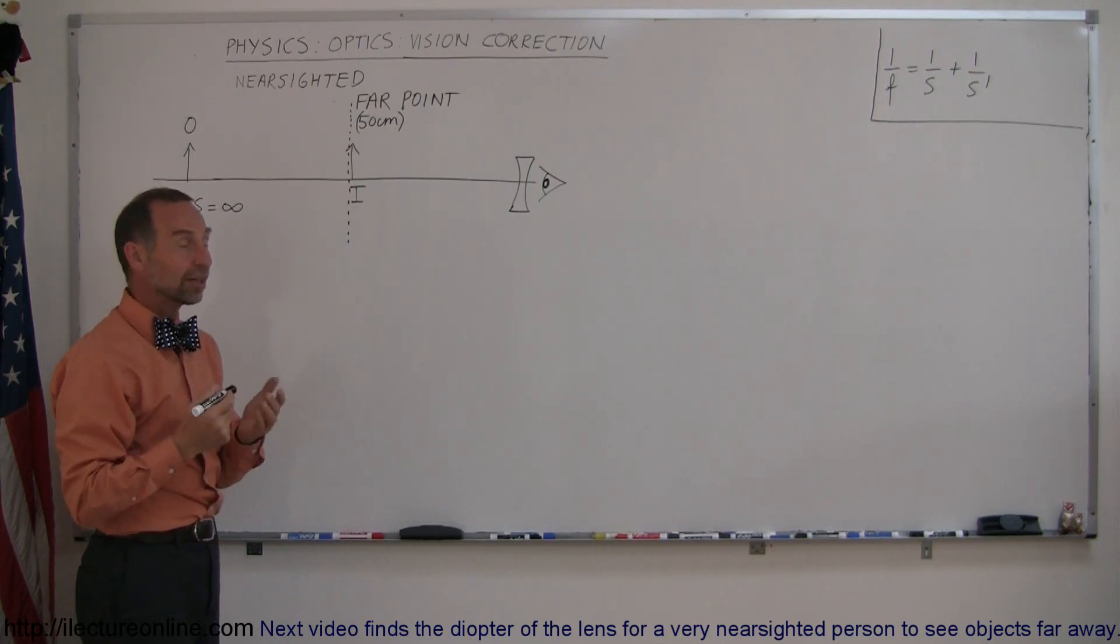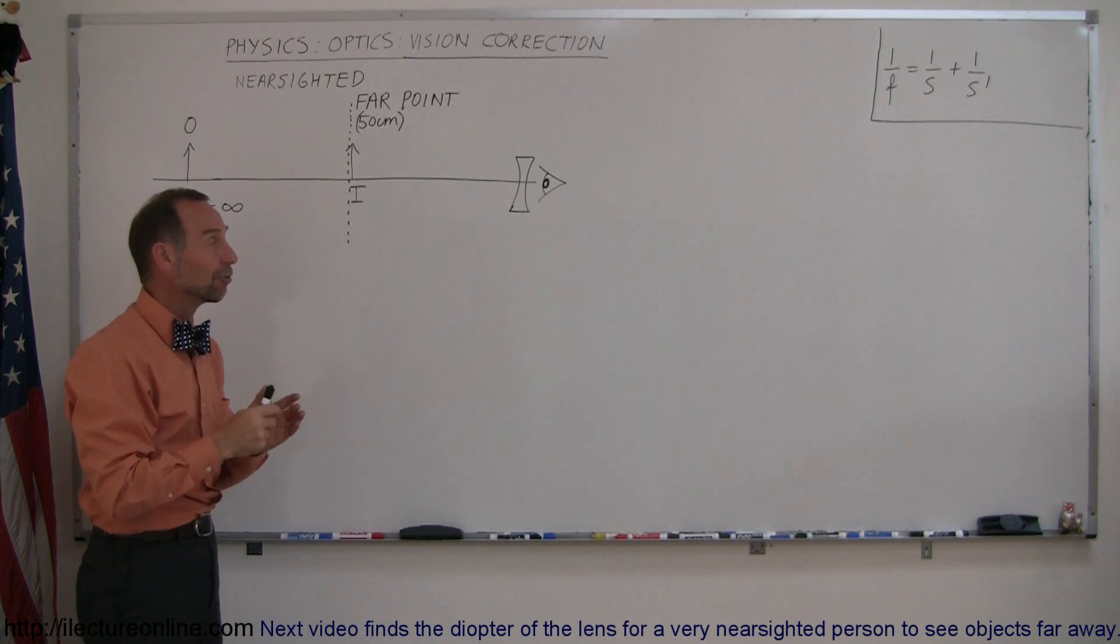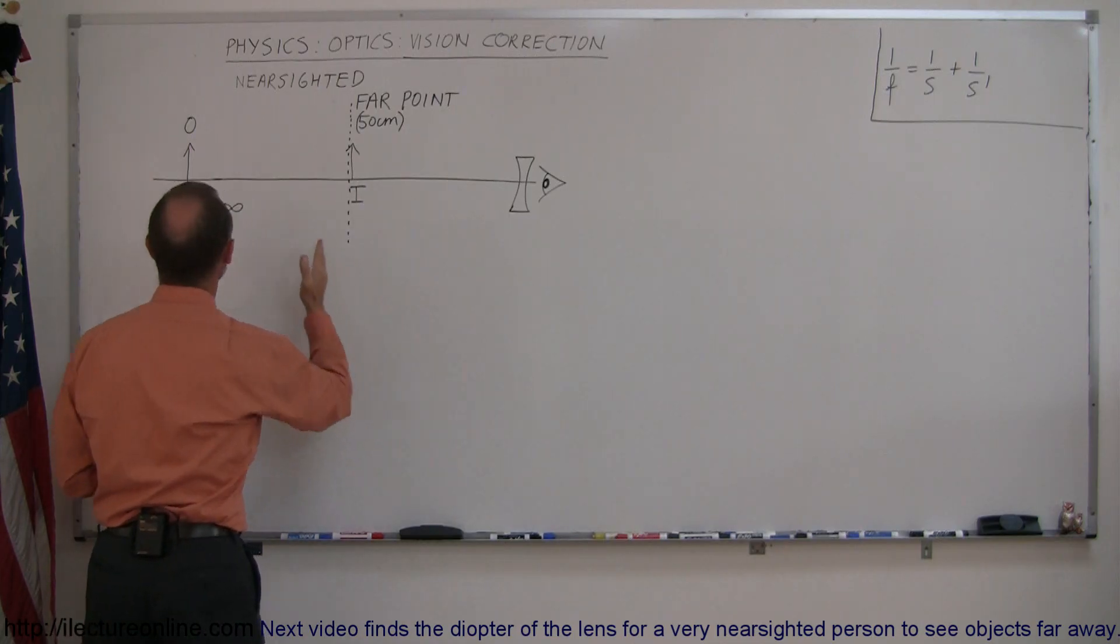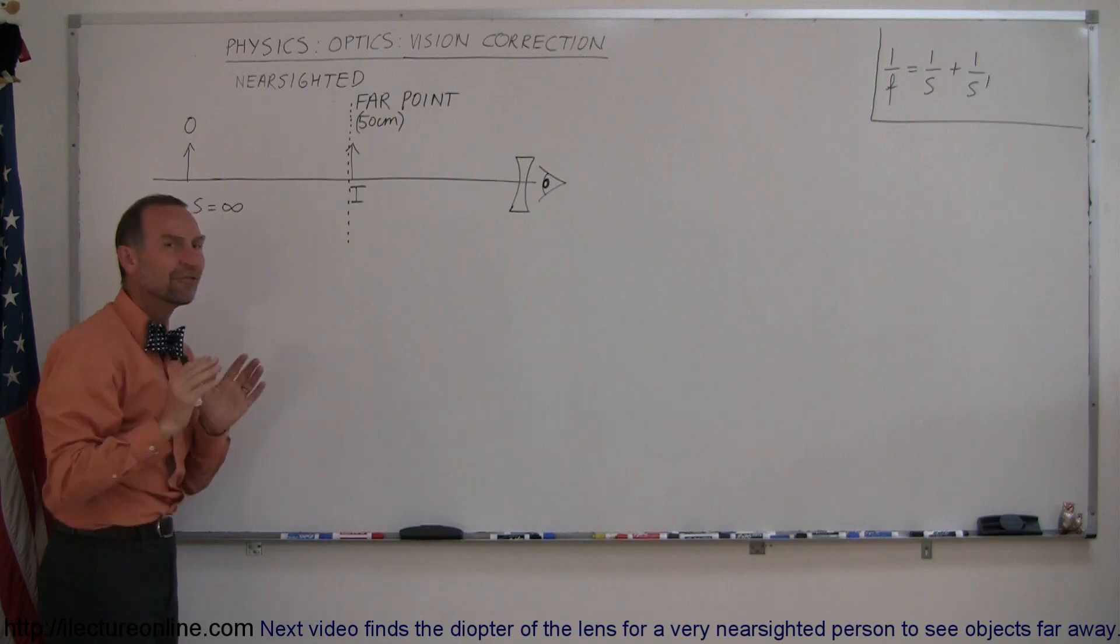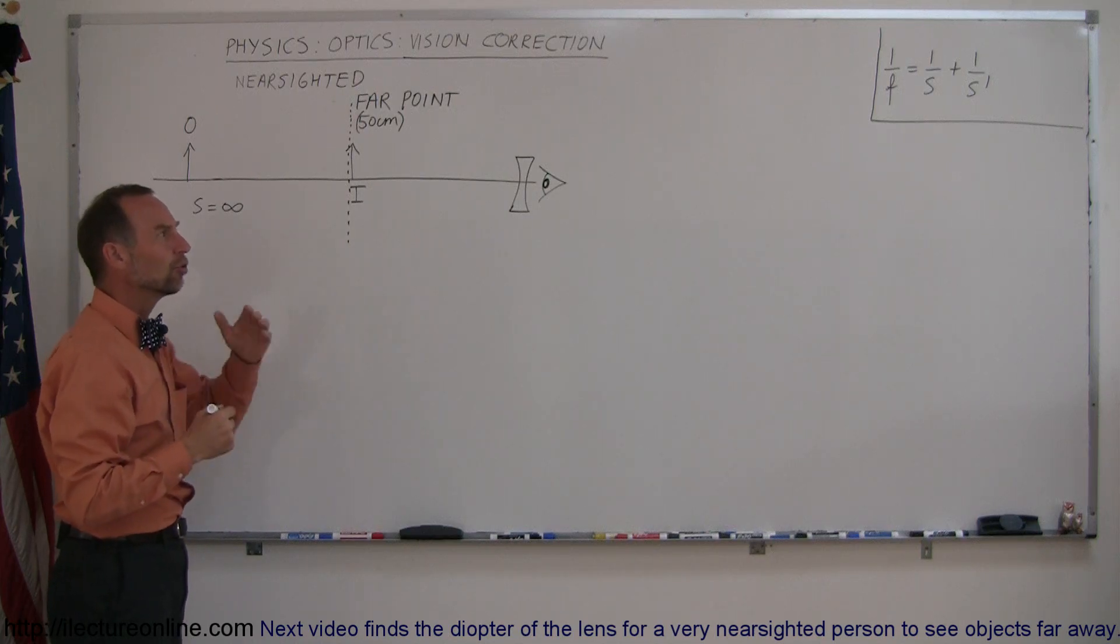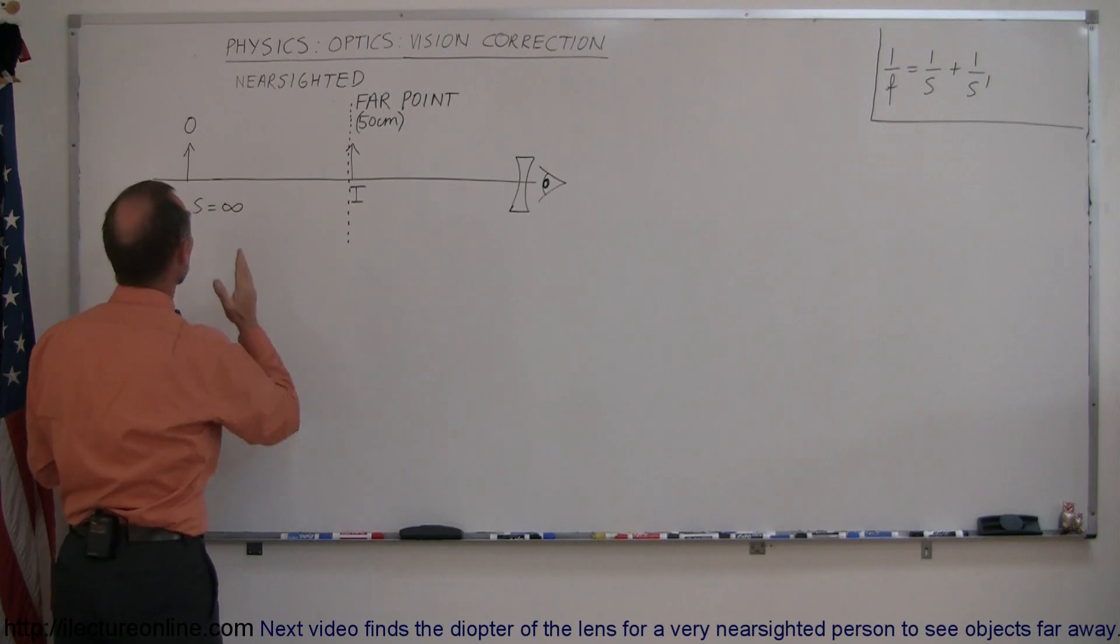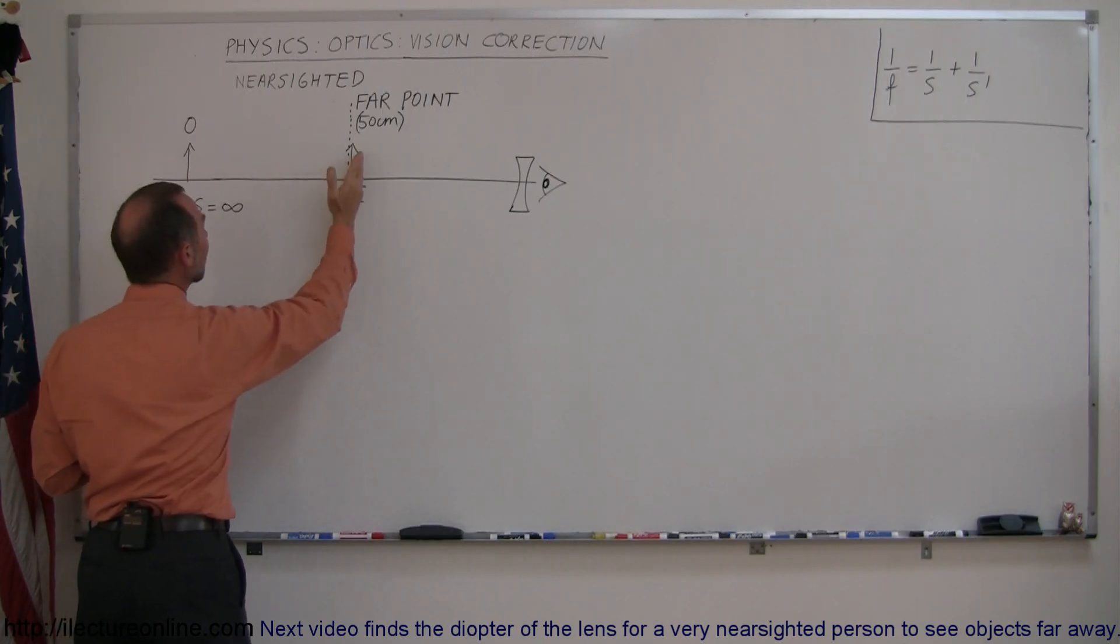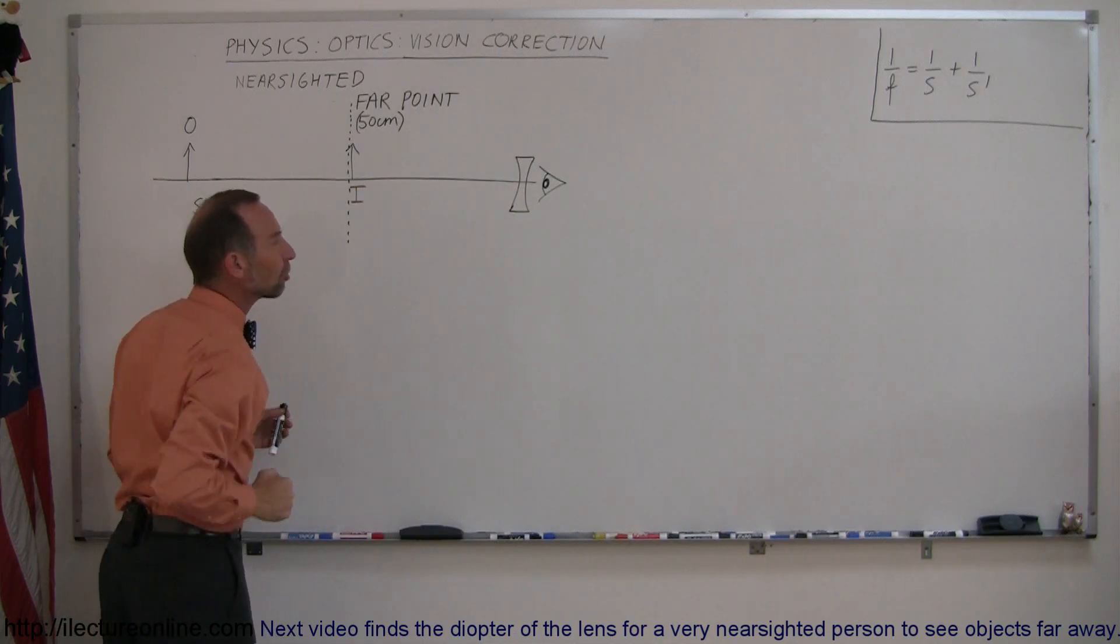The objective then is to put corrective vision glasses on with a diverging lens that will cause an object that is very far away—we say it's at infinity, of course it's not really at infinity but relatively far away—using the lens equation it acts as if it's at infinity, and we want to bring the image over here just inside the far point so the person can see that image clearly.